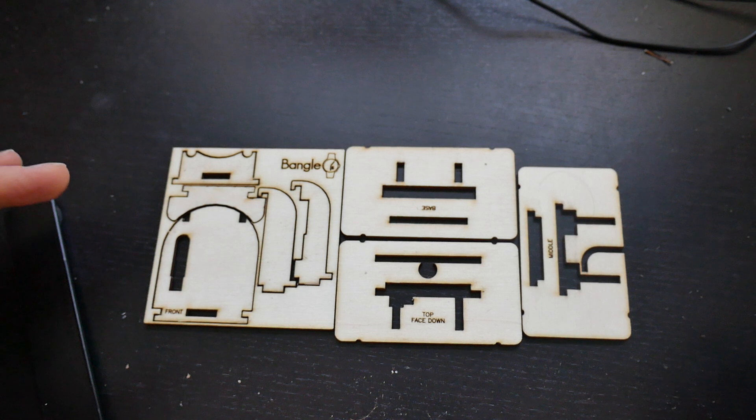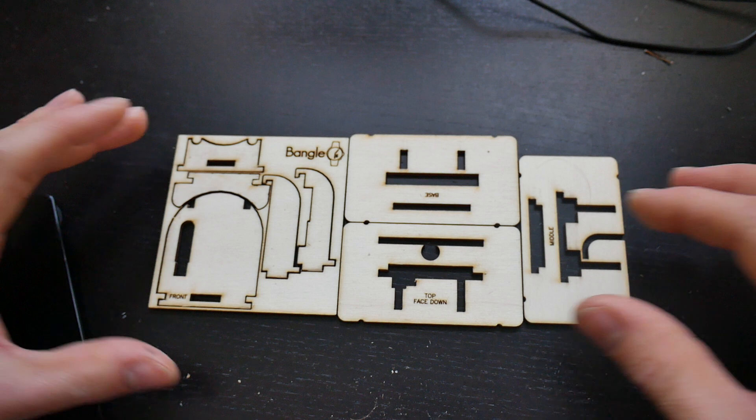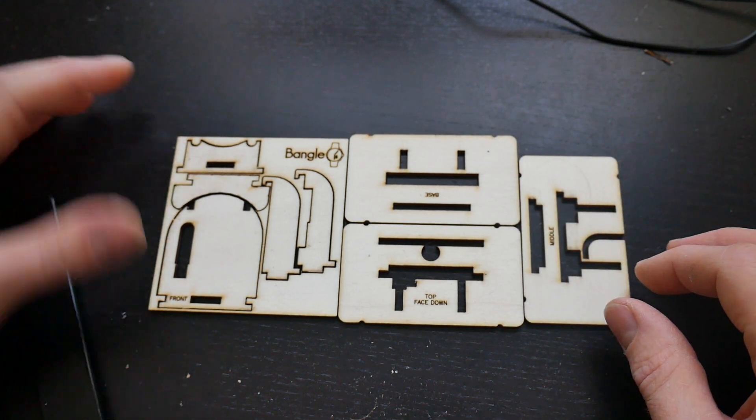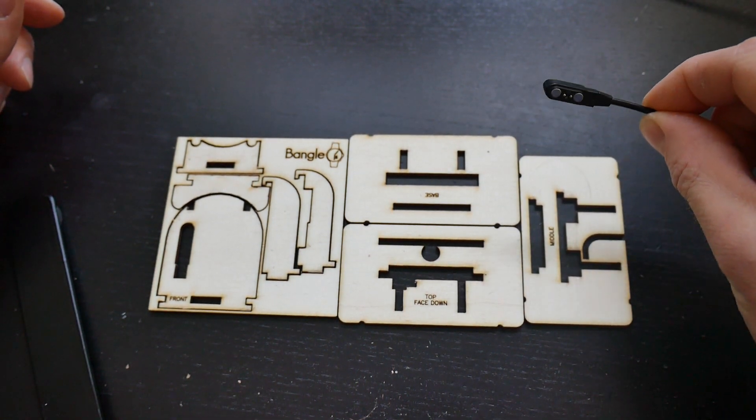The first thing you need is the laser cut designs. You can get these from the Espruino shop or you can laser cut your own using the files that are available if you've got access to a laser cutter. Then you need a charge cable which is what you would have got with your Bangle.js.